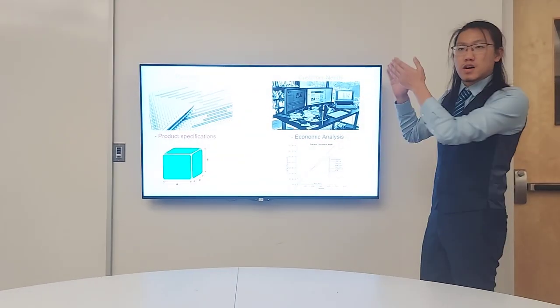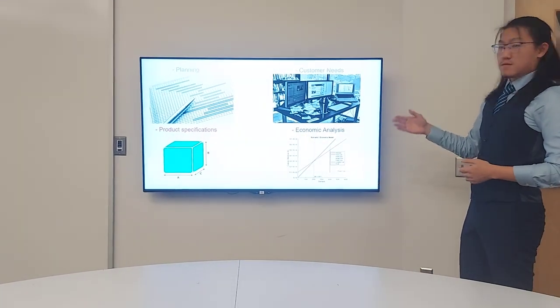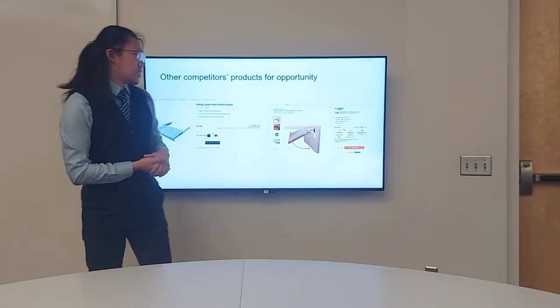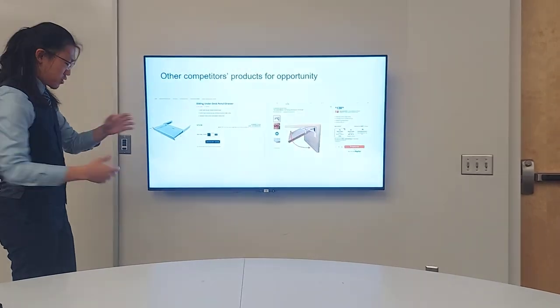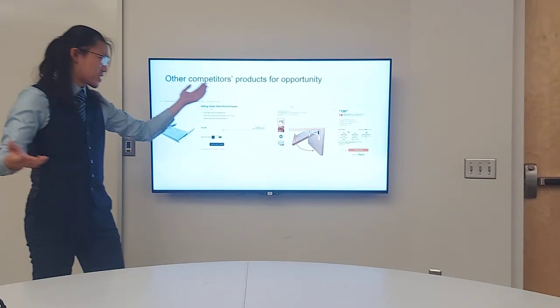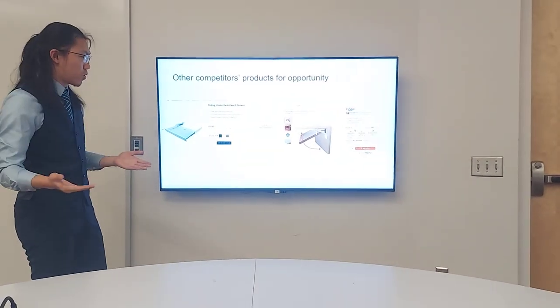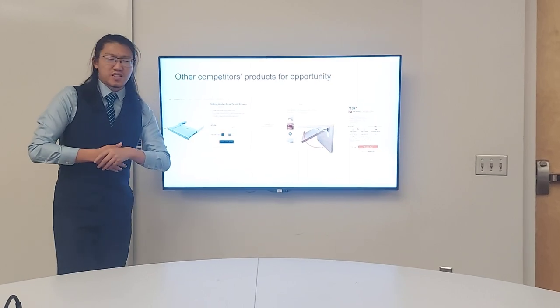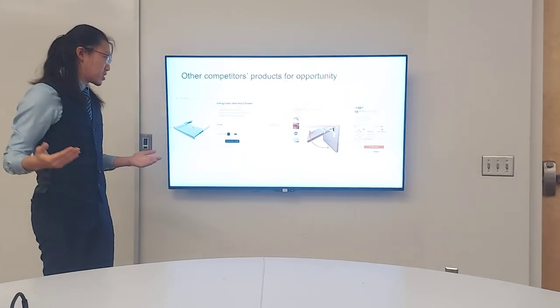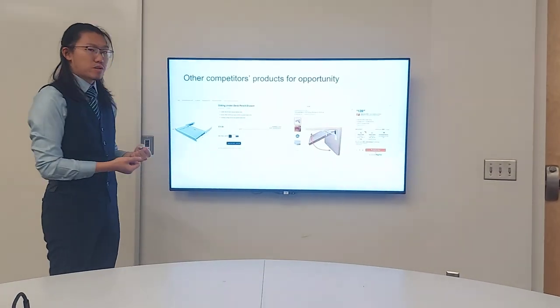After we realized what our customers want, we started working on product specifications. We found two competitors online: an under-desk pencil drawer and a flapping desk attachment. There are two problems with them. First, they're way too expensive, and second, they're not portable. We realized many Virginia Tech students live in apartments where they're not allowed to drill holes in walls or furniture. So we decided to make something that can be easily detached and attached, and that you can carry away whenever you want.